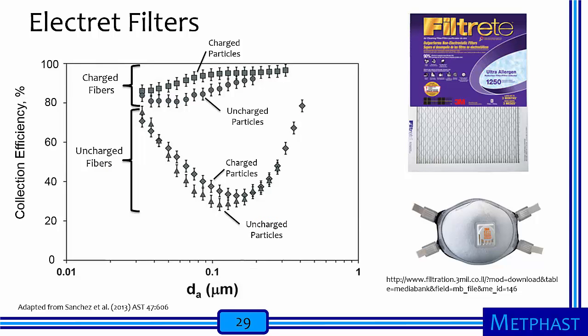Electret filters leverage electrical forces to improve the collection efficiency of filters. A filter with uncharged fibers has a collection efficiency curve resembling a poor home furnace filter, regardless of whether the particles are charged or not. If instead the fibers of the filter are charged, then performance is dramatically improved for both charged and uncharged particles. These type of filters are sold commercially under the brand name Filtrete by 3M and also used in respirators.